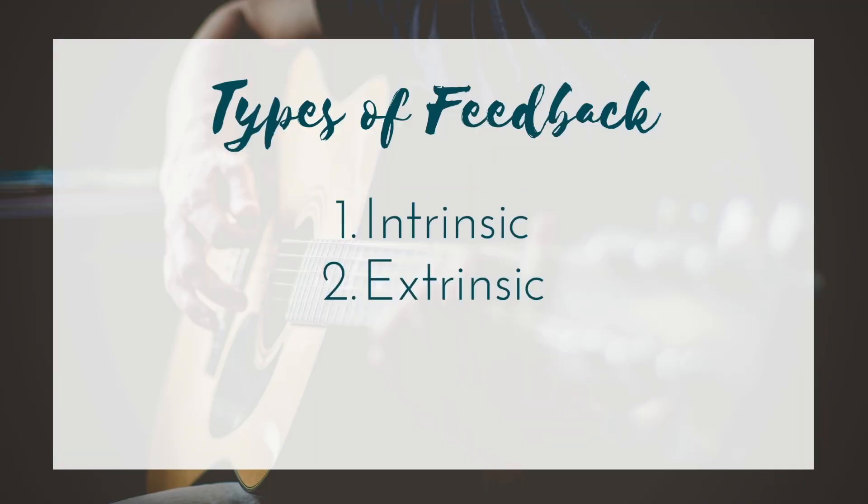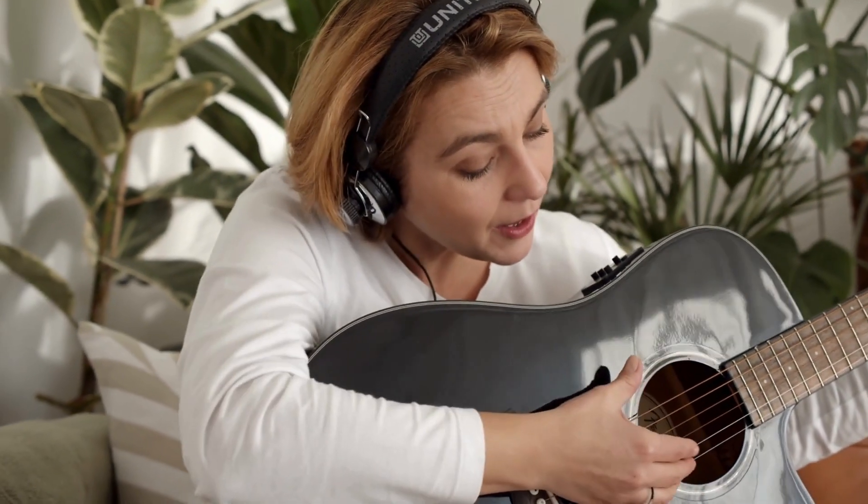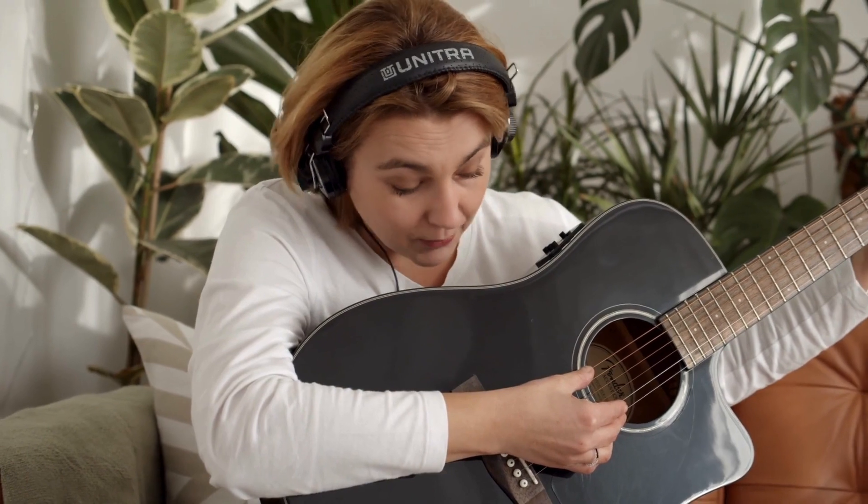The second broad category of feedback in motor learning is extrinsic feedback. And as the name suggests, unlike intrinsic feedback that comes from within the person — their own sensory systems — extrinsic feedback is coming from external sources. So this could be some type of barrier in their way, or it could be a therapist or a coach, whatever is outside of them providing feedback to them. In the guitar example, if somebody strums the guitar and they're getting feedback from the therapist or music teacher, that is external feedback that they now get to use to adapt and modify their motor performance.